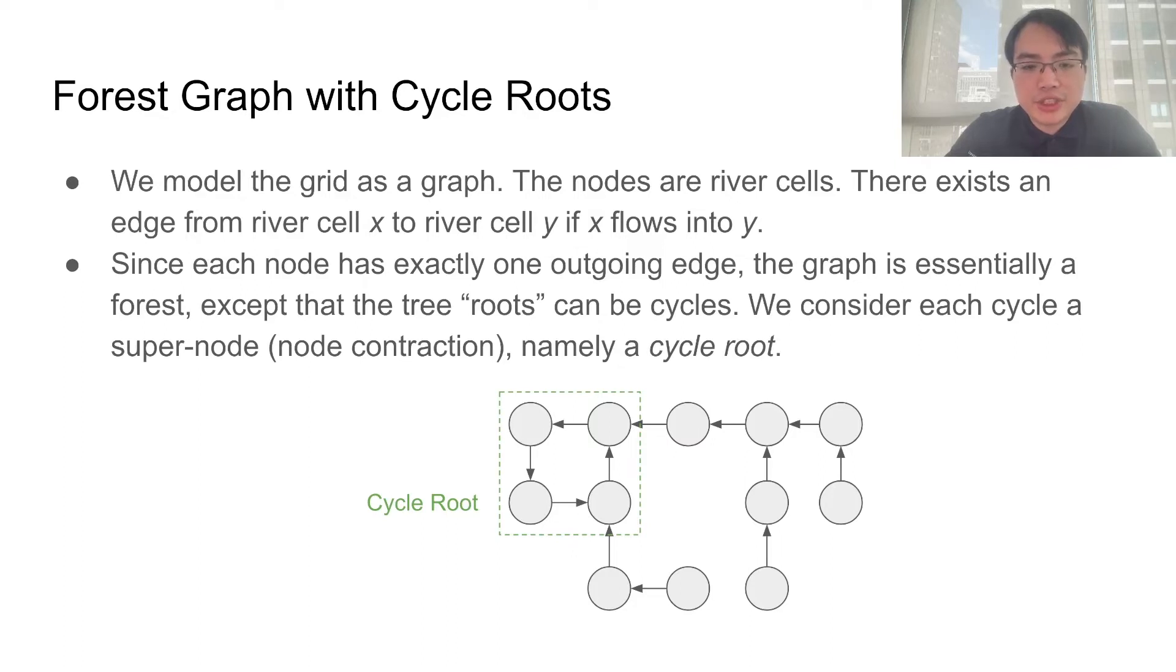In the slide illustration, we will see a single tree with a cycle root. The cycle root marked by the green rectangle has four nodes in a cycle.